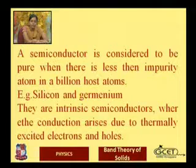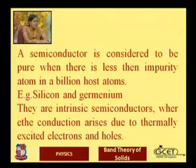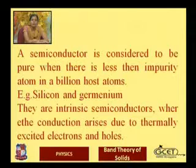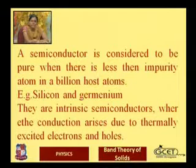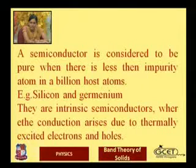A semiconductor is considered pure when there is no impurity atom in a billion host atoms. Well-known examples are silicon and germanium, which are called intrinsic semiconductors. Semiconductors can be classified into two parts: intrinsic and extrinsic.